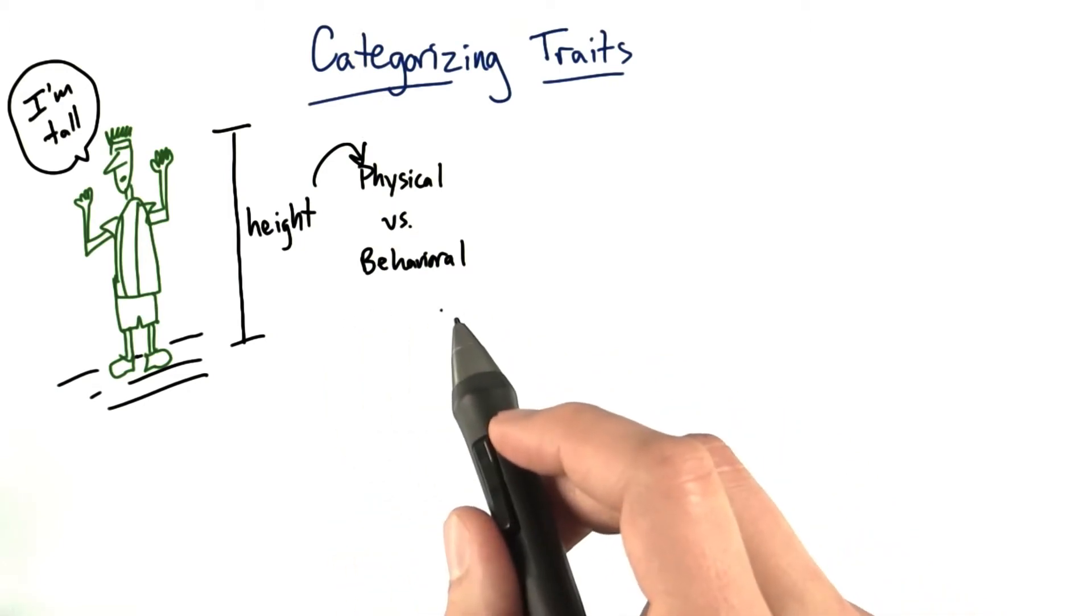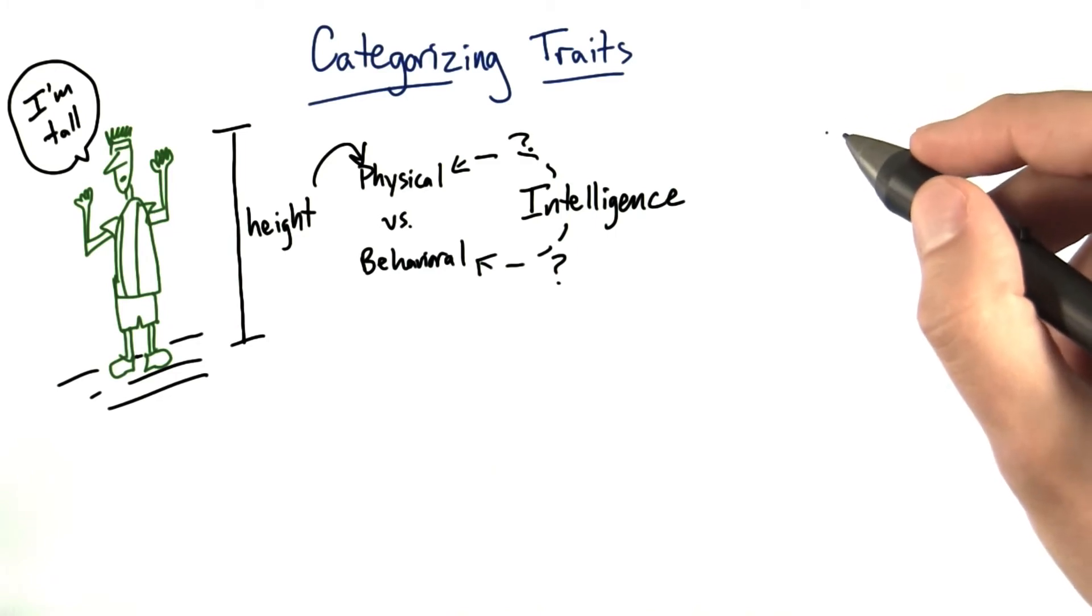But something like intelligence is harder to categorize. Intelligence might be something you'd describe as behavioral and not physical.